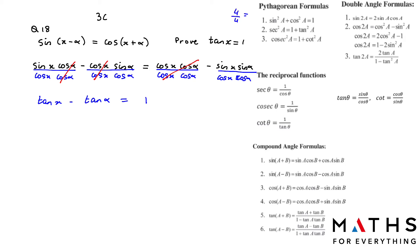You get 1, not 0 — so keep that in mind. Sine over cos x will give me tan x. Sine alpha over cos alpha will give me tan alpha. Always group the like terms together. We have tan x here and here, so bring them on one side.